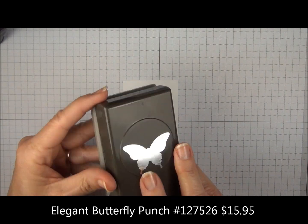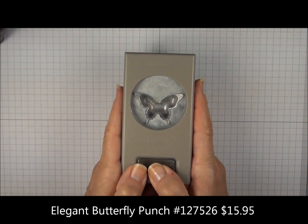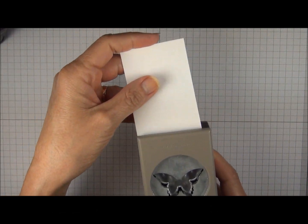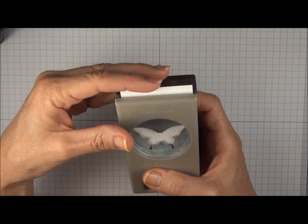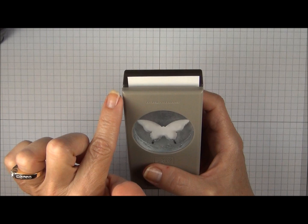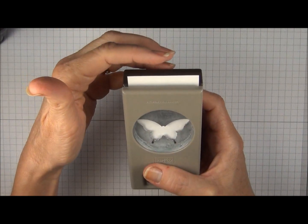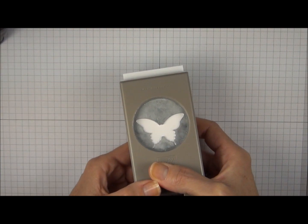This is the Elegant Butterfly Punch. You're going to slide this up to open it. You're going to place the card stock in as far as it will go and then make sure that it's centered from the left to the right and give that a squeeze.